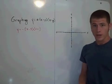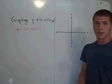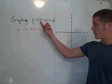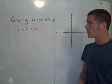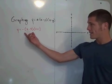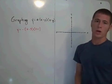This is graphing a quadratic equation in intercept form. Intercept form is y equals a times x minus p times x minus q. And here we have an example, y equals negative x minus 3 times x plus 1.